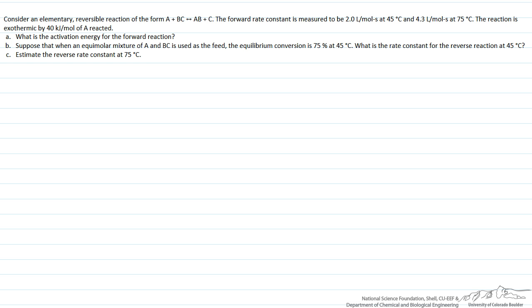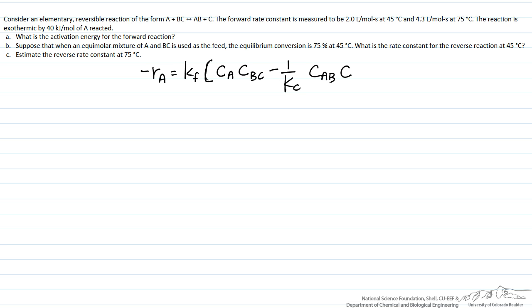This is an exam problem that deals with the kinetics of an elementary reversible reaction. Because it is elementary and reversible, we can write down the rate of consumption of A as equal to a forward rate constant Kf times the concentration of the reactants raised to their stoichiometric coefficients — in this case to the first power — minus 1 over an equilibrium constant times the concentration of the products raised to their stoichiometric coefficients.